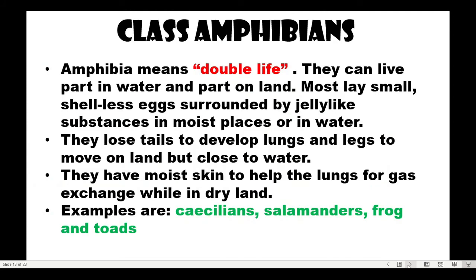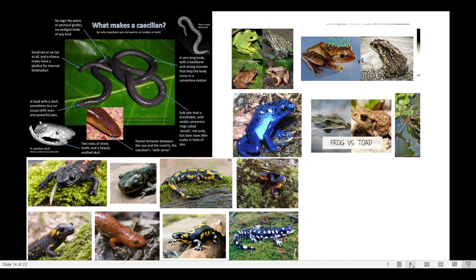Class Amphibia — 'amphibia' means double life. They can live in water and partly on land. They mostly lay small, shell-less eggs surrounded by a jelly-like substance in moist places or water. As they develop, their tail disappears and lungs and legs develop to move on land, though they stay close to water. They have moist skin to help with gas exchange on dry land. Examples are caecilians, salamanders, frogs, and toads.